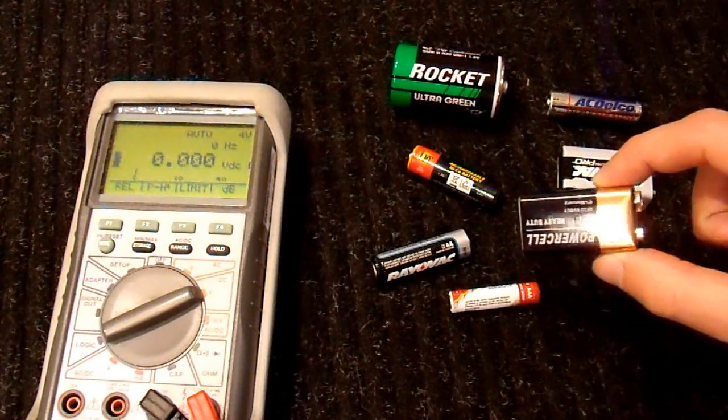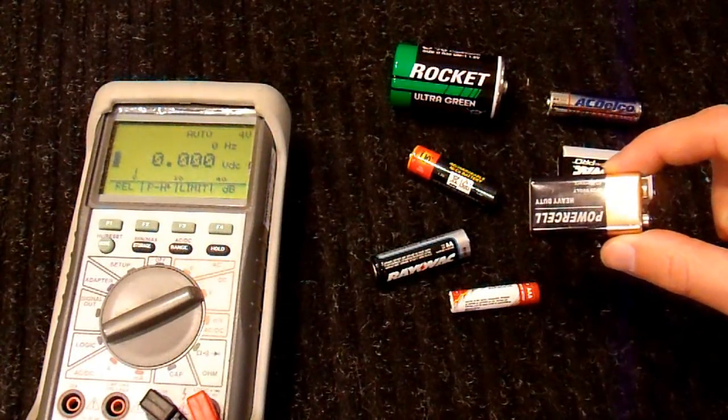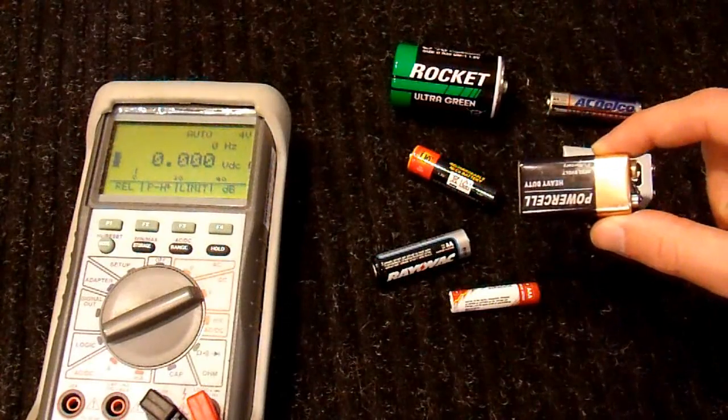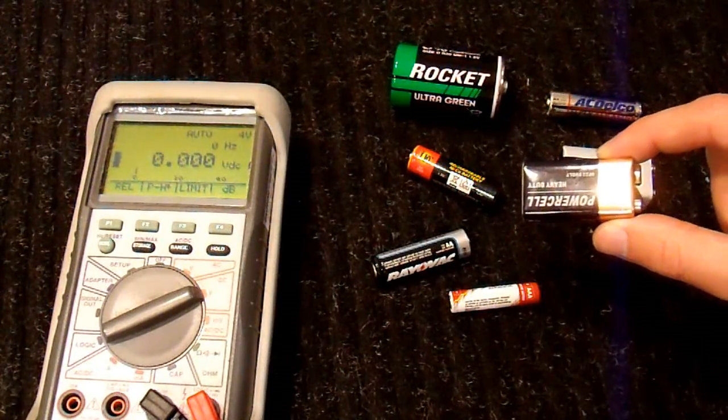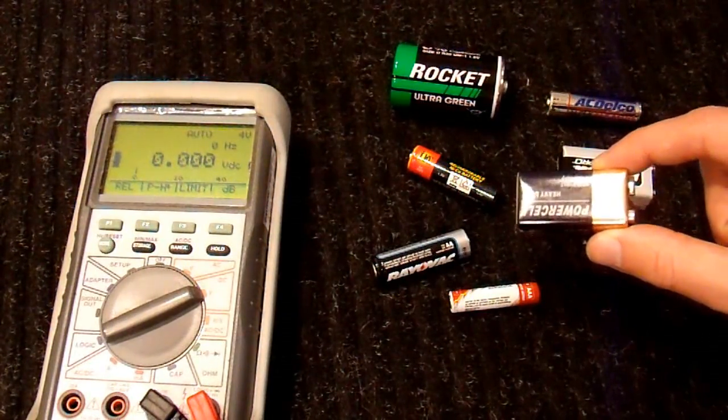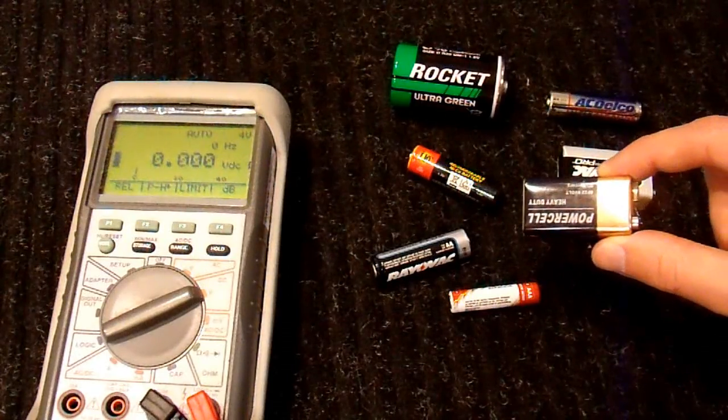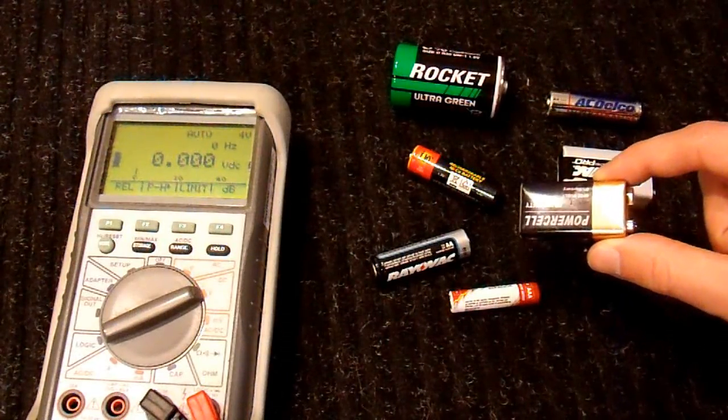This battery may work okay if you're just running a digital watch or something of that nature. But this was in a smoke alarm. And a smoke alarm, when it needs to alarm, has to draw a pretty good amount of current from a battery. If it can't draw that current, then it can't alarm.